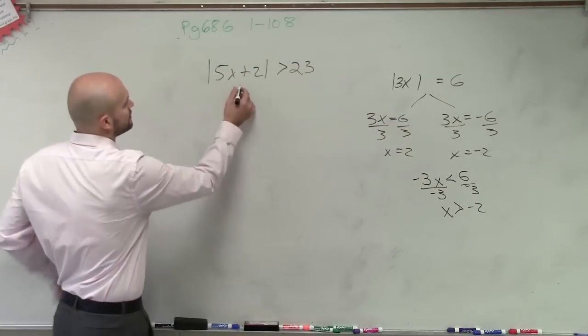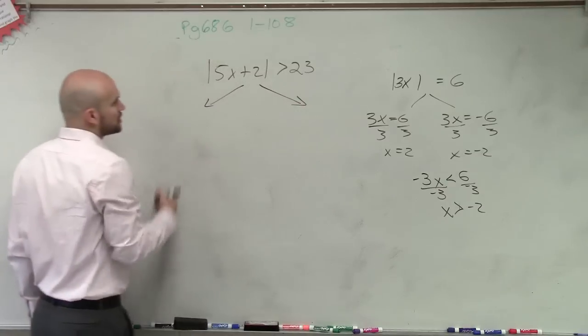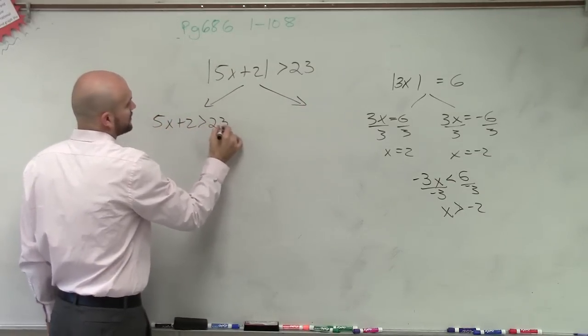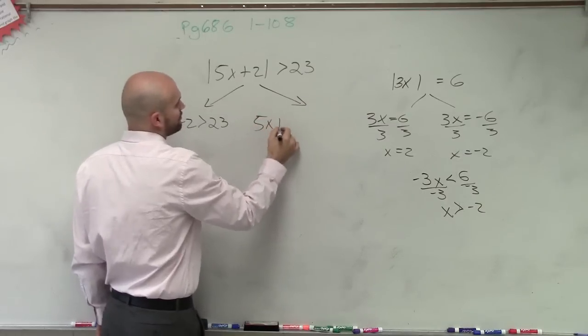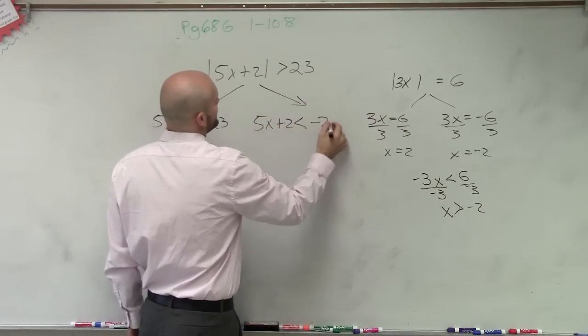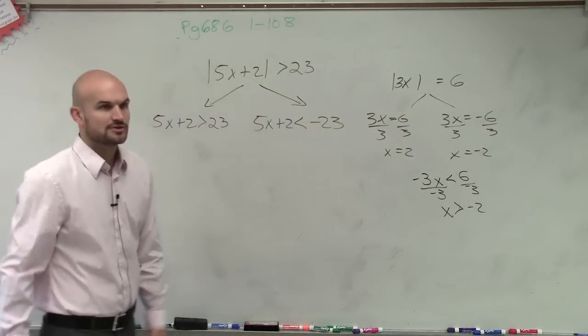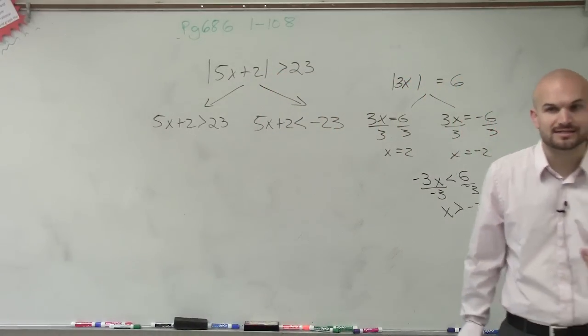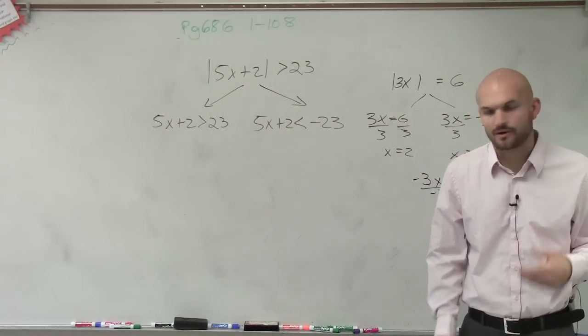But when I'm creating my two circumstances, I'm going to have 5x plus 2 is greater than 23, and then I'm going to do 5x plus 2 is less than negative 23. So since I'm now creating this negative value, I've got to make sure that I flip the sign to make sure it's going to still be correct, all right?